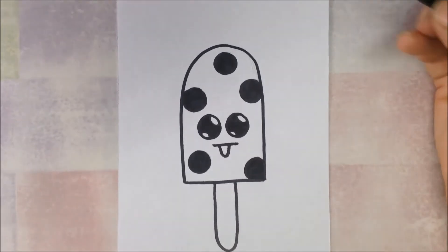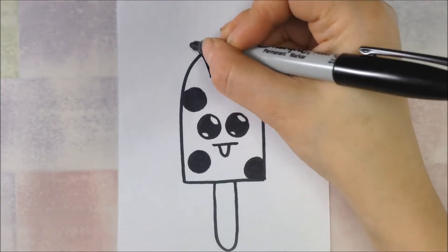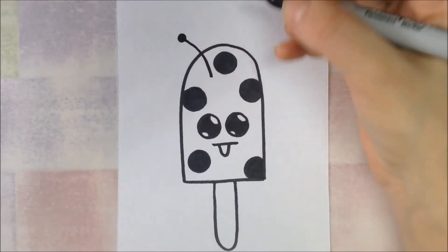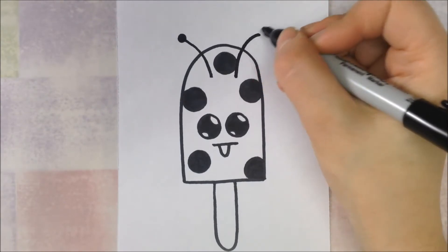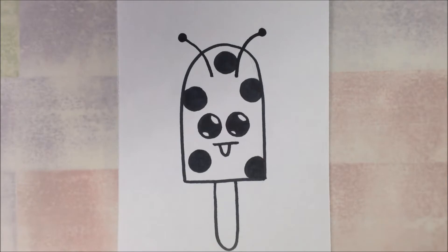And then our ladybug needs antennae, so we're going to draw two antennae on top. A curved line with a little circle on the end, and another curved line with a little circle on the end. And if it goes through or touches one of your spots, that's okay.